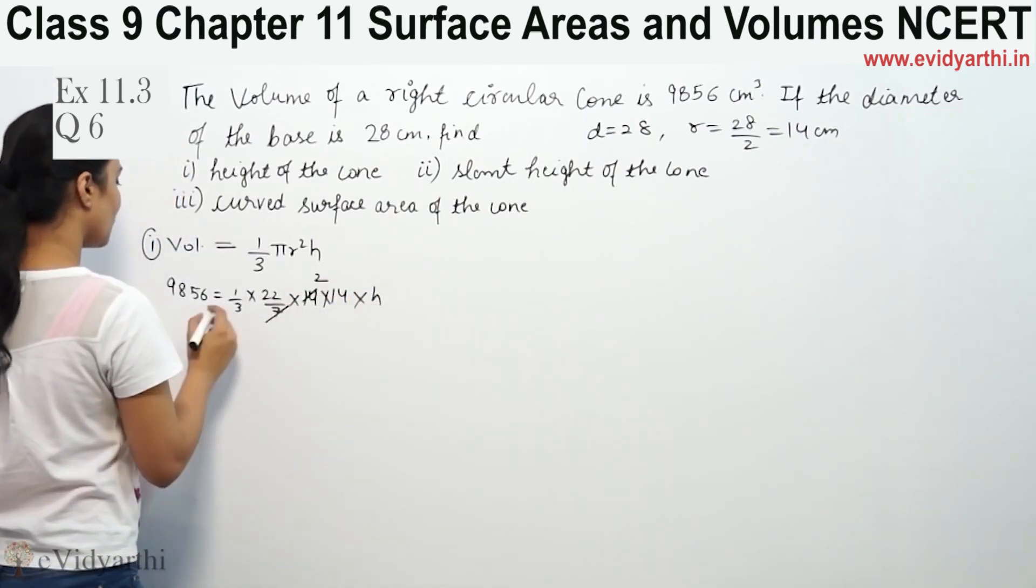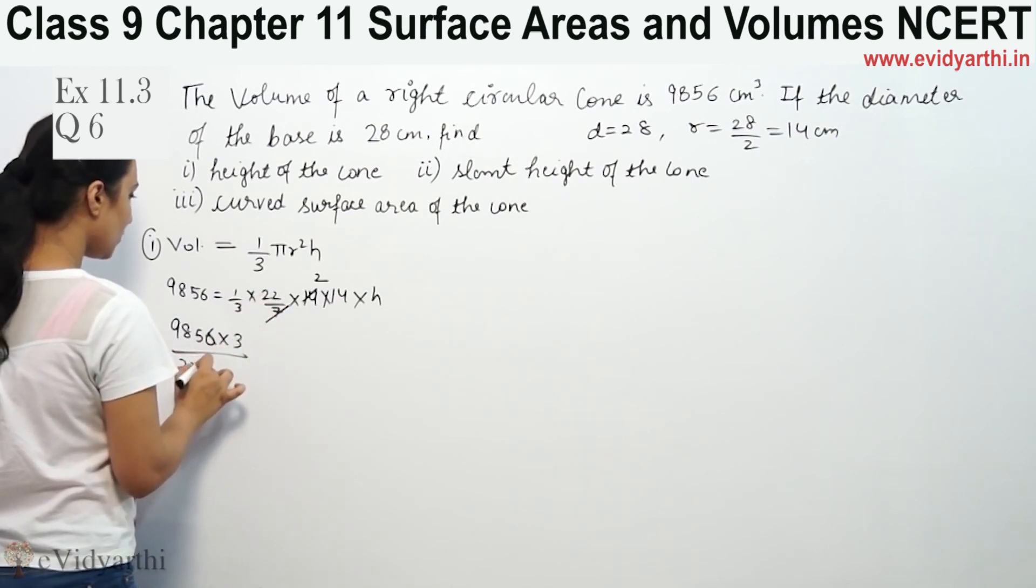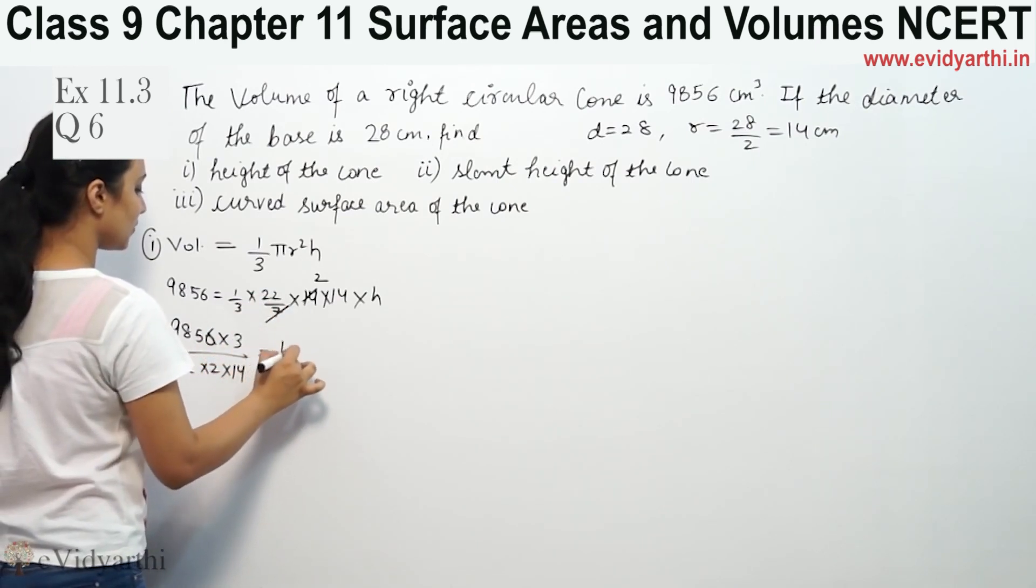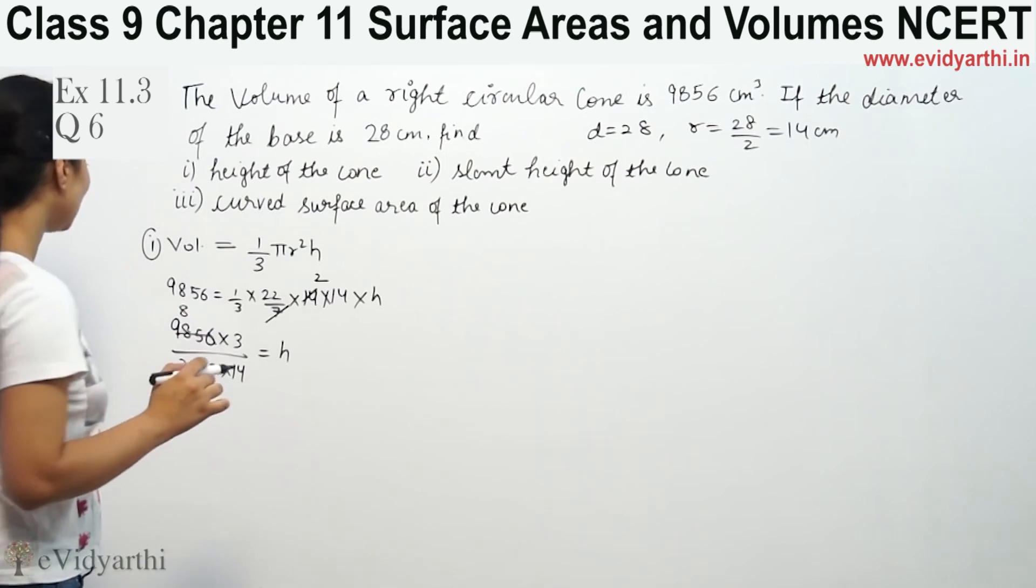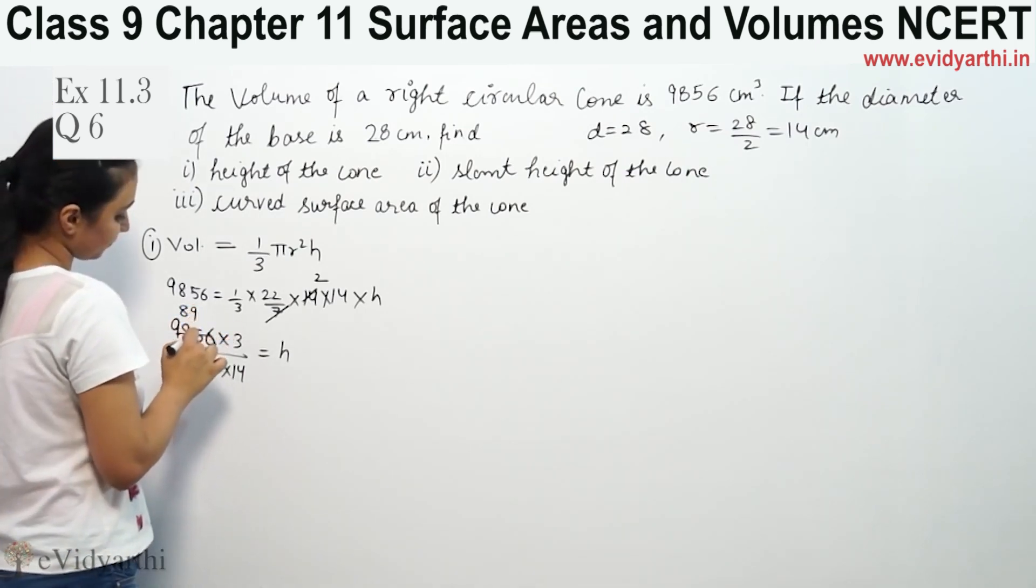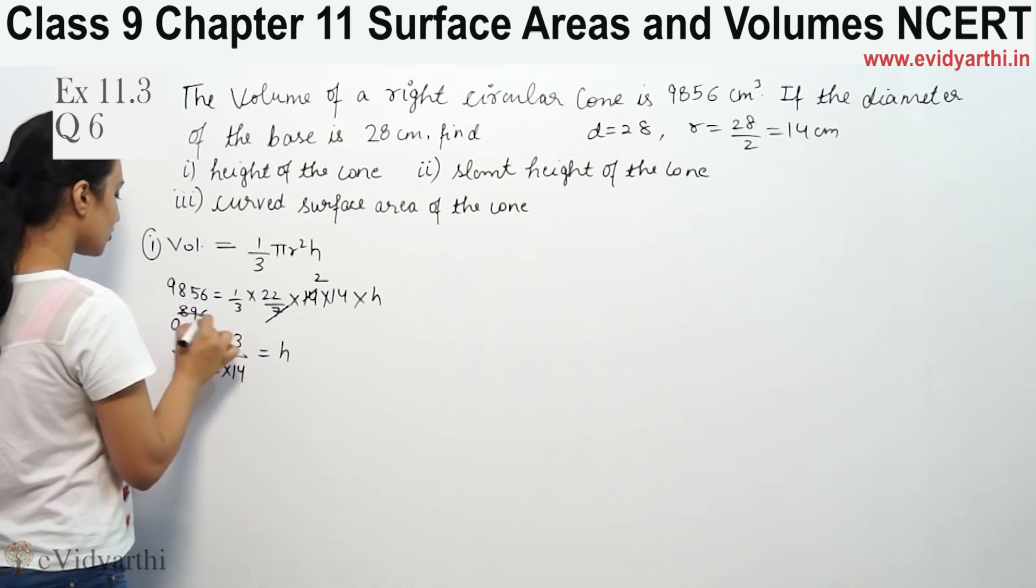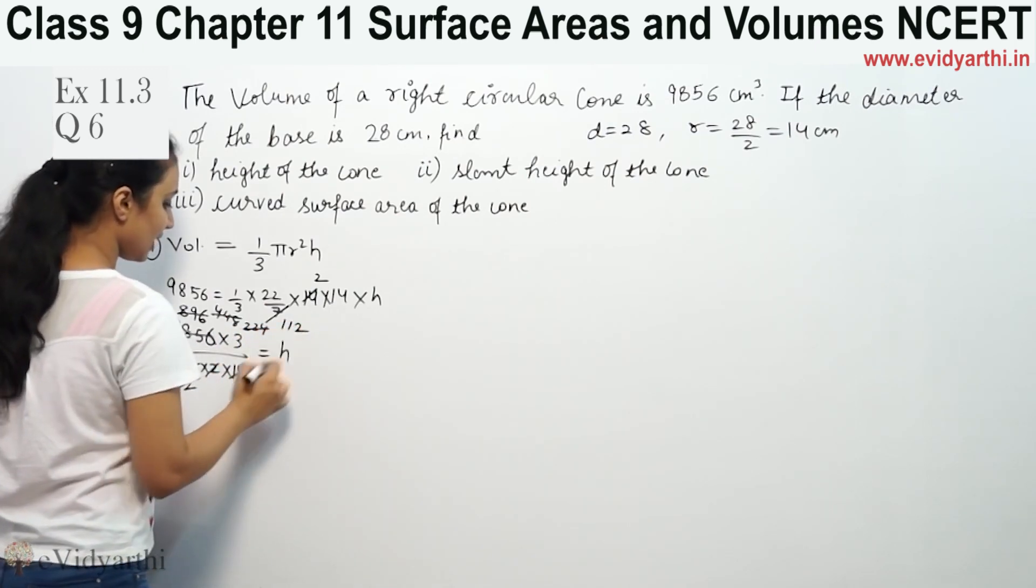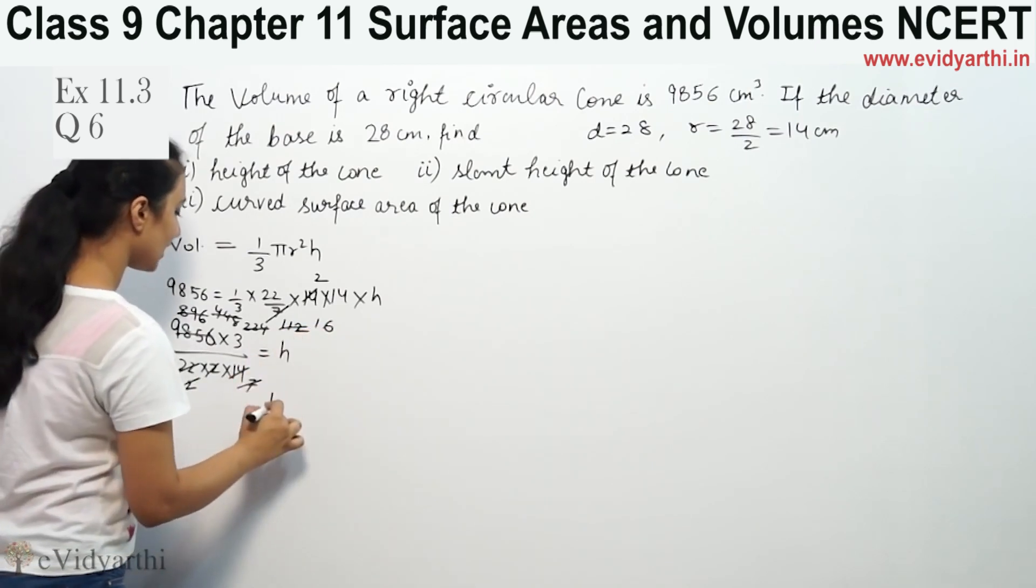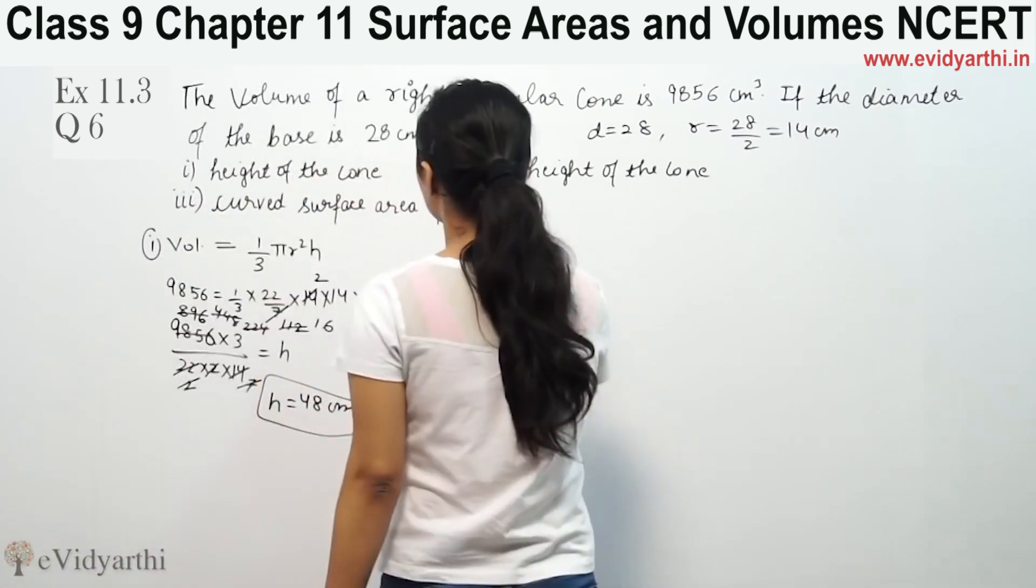So 7 ones up, 7 twos up. Now 9856 into 3, 3 up as well. Times 22, into 2, into 14 equals h. 11 twos up, 11 eights up equals 88. 11 nines up, so this is 105. 11 sixes up. 2 fours up, 2 eights up, 2 twos up, 2 sevens up, 2 ones up. 7 ones up, 7 sixes up. So height is 48 centimeters, because 16 threes up is 48. So 48 centimeters is the height.